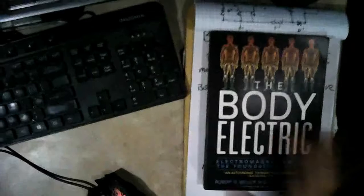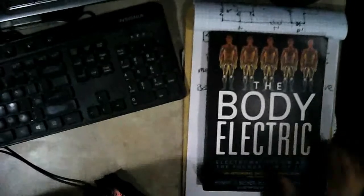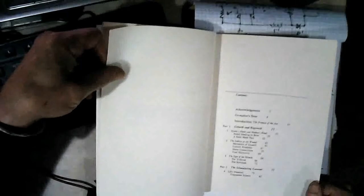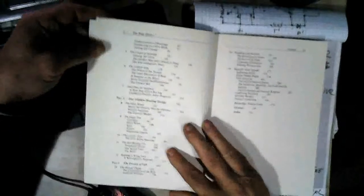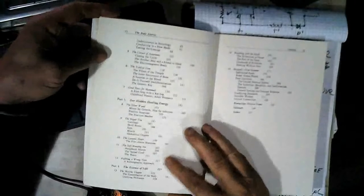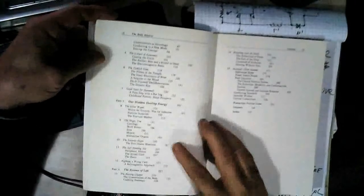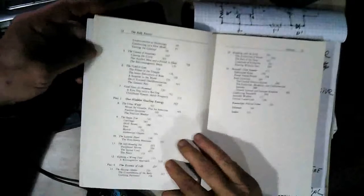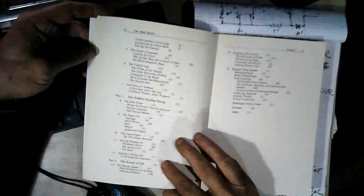What he discovered was that electricity plays a big role in our physiology, in our body. Part one is growth and regrowth. Part two is the stimulating current. Part three is our hidden healing energy. Part four is the essence of life. And he covers a lot of different things.